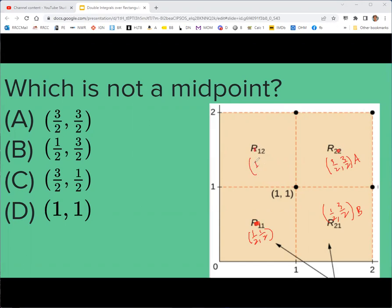And then this would be one half, three halves. That's b. This should be three halves, one half, because you've gone out three halves in the x direction. So this is actually c. So a, b, and c are those three there. And then the first one wasn't on there and d was correct. So we would use those points, the midpoints of each of these small rectangles for our sample points.